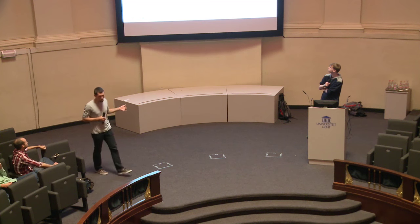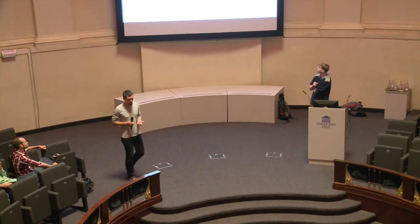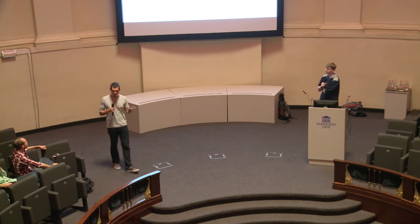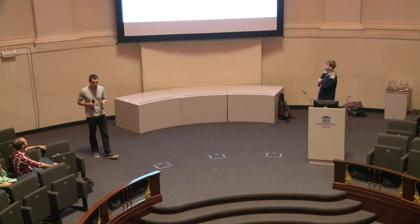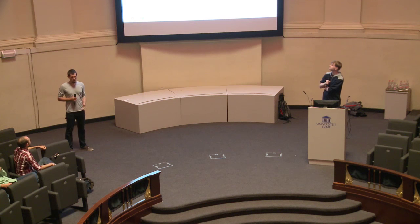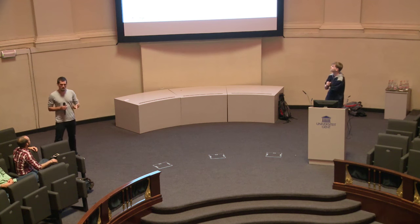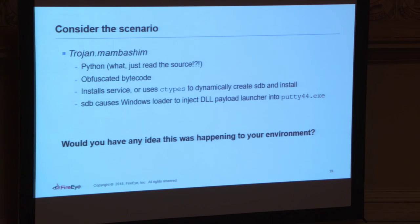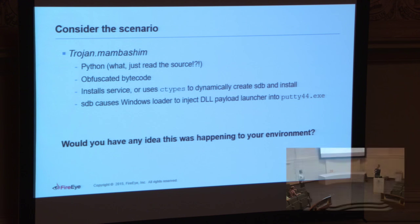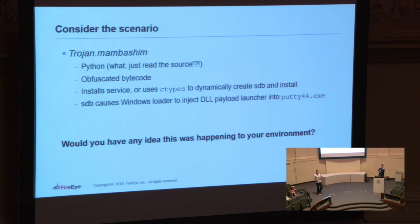One more example of malware I found recently — I think it's called Mambashim — an interesting backdoor written in Python. At first I thought I'd just decompile it, but it was the first time I'd seen obfuscated Python bytecode. Under the hood, it used the ctypes module to directly interface with the native API, dynamically creating new SDB files and installing them for persistence. This is mass malware being distributed all over the place. How do we know it's on your system, besides relying on antivirus to do its job?